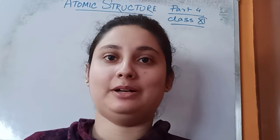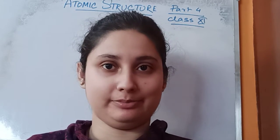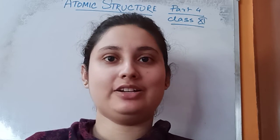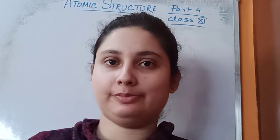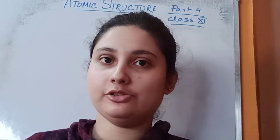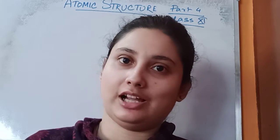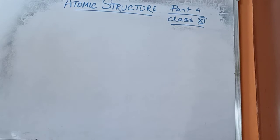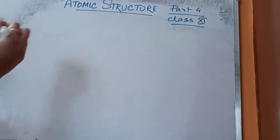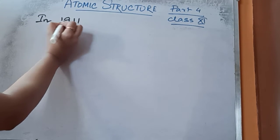Hello students, today I have come up with the next part of the chapter atomic structure from class 11 syllabus. Today we will start with Rutherford's scattering experiment. With the help of this experiment, Rutherford was able to derive his own atomic model. The experiment was done in 1911 to depict the atomic model.